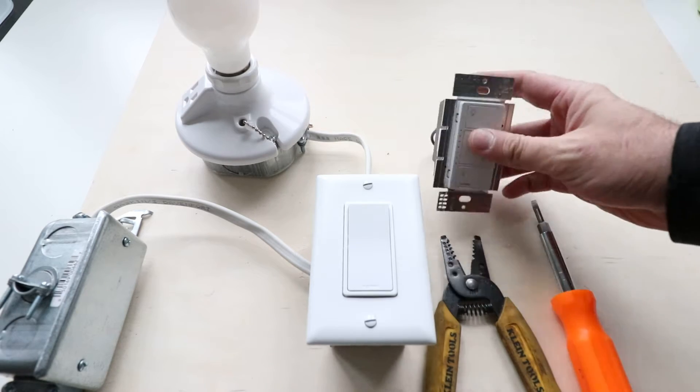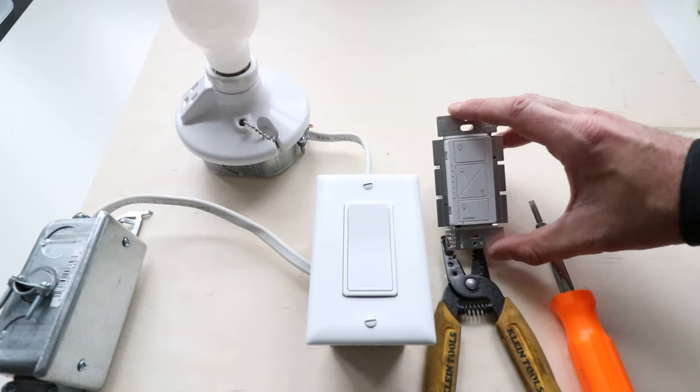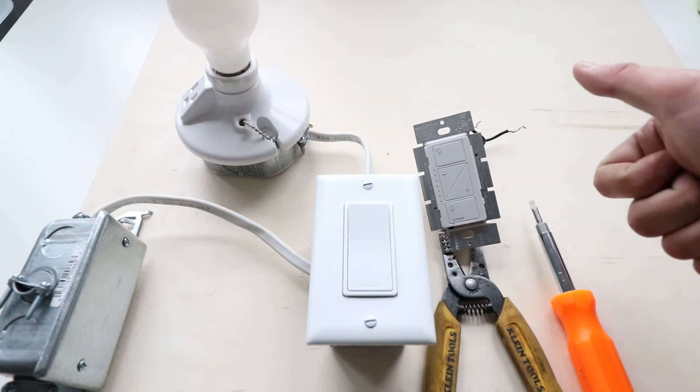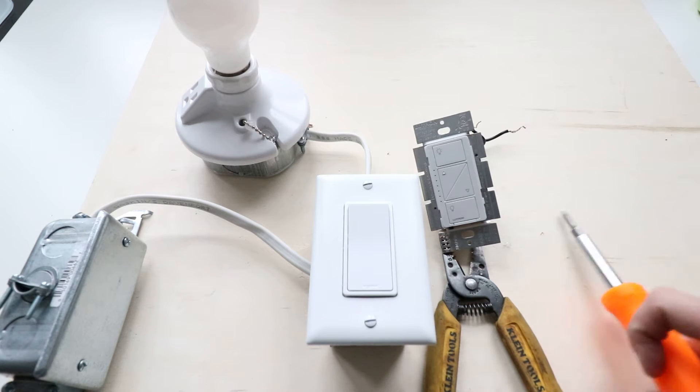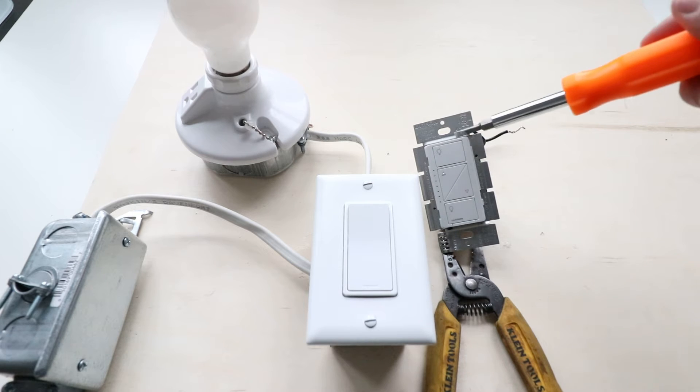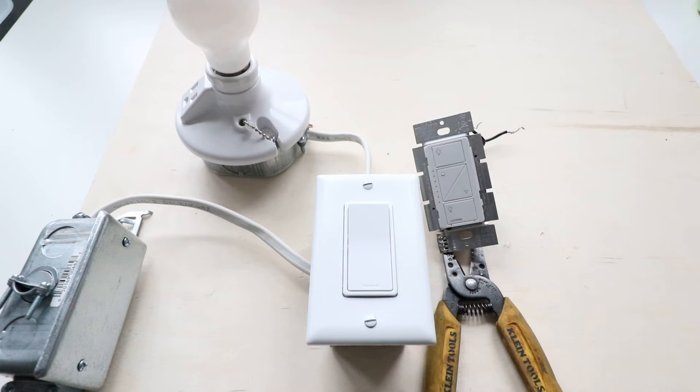So what we've got here is the Lutron Caseta smart dimmer switch. It allows you to control your light switches with Alexa, Google Home, from your phone, or with Siri. It works with all the major voice assistants. We're going to teach you how to install this smart dimmer that does not require a neutral wire in this existing light switch.